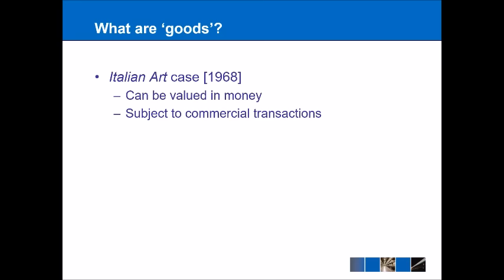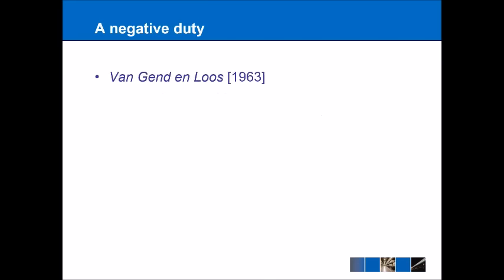This is an easy way to pick up marks at the start of any question on free movement of goods. Article 30 also imposes a negative duty — this contrasts with a positive duty where states have to actually do something. A negative duty means states are obliged not to do something, and in this case, not to put up borders between their countries.